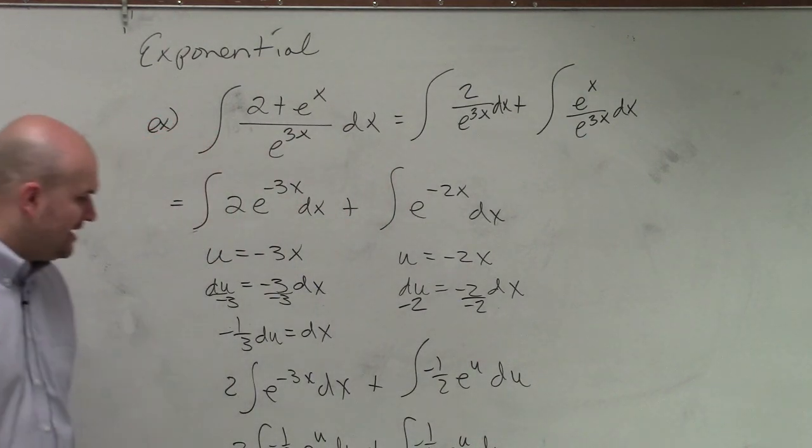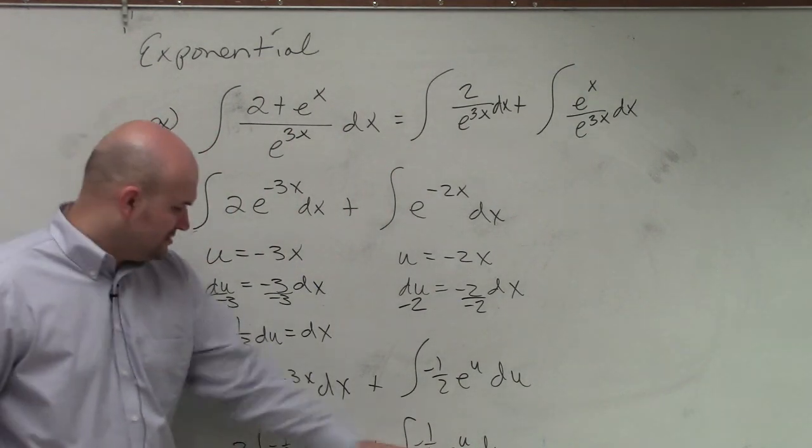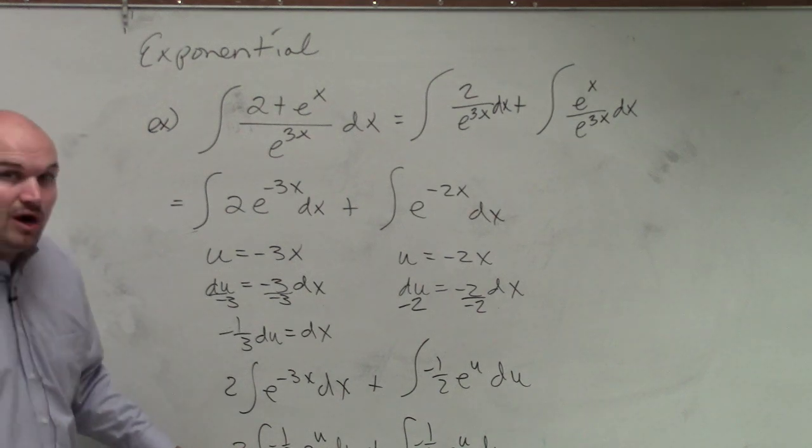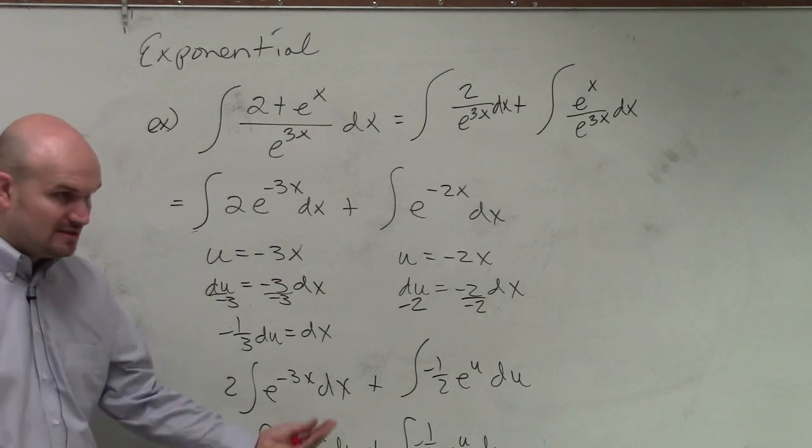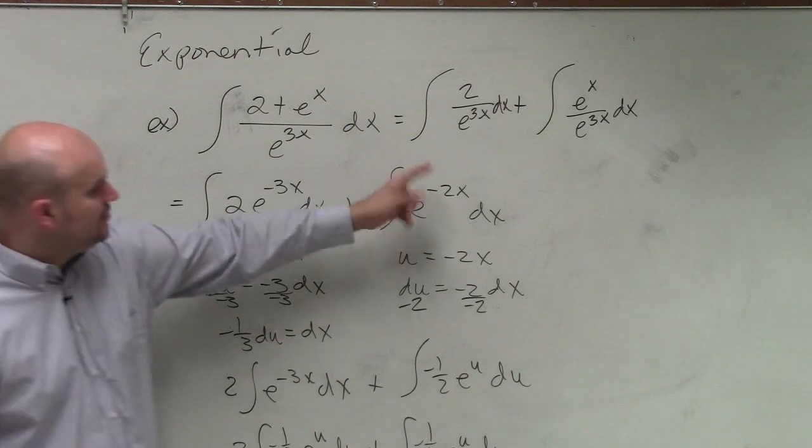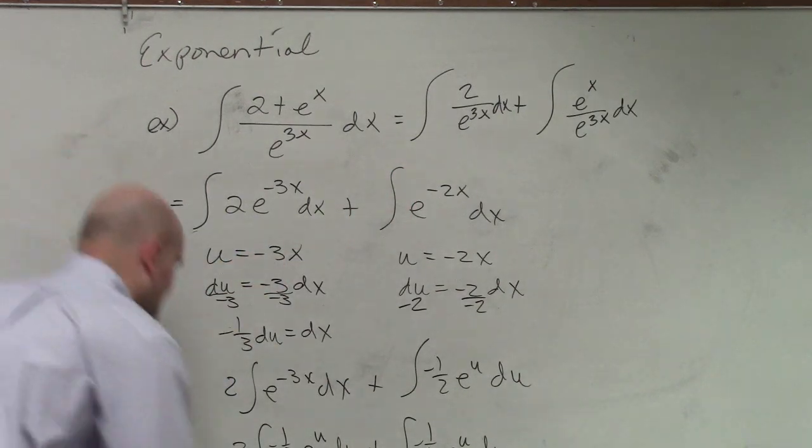So this is where I'm at right now as far as my du's and then this 2. Now, all I simply need to do is take out those values and then replace u with what I have in each case. So therefore, my final answer is going to be negative two-thirds e to the negative 3x plus negative one-half e to the negative 2x plus c.